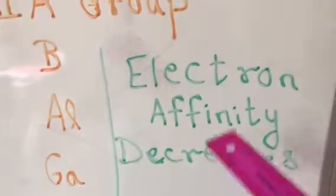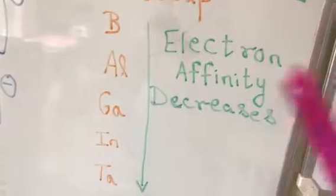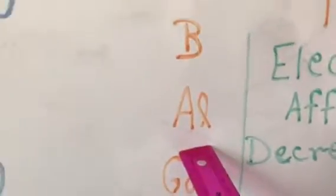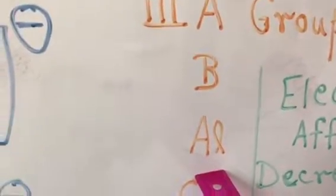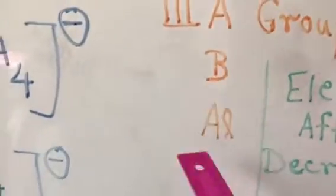As we go down the same group of the periodic table, electron affinity decreases. Electron affinity is nothing but the affinity for electrons. Since boron is the first member of the third A group, it has more electron affinity than aluminium, which is the second member.